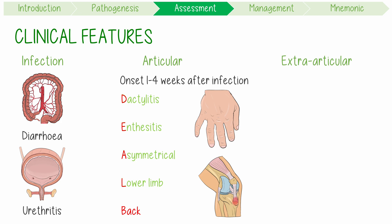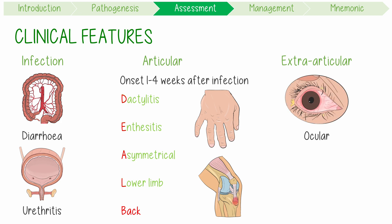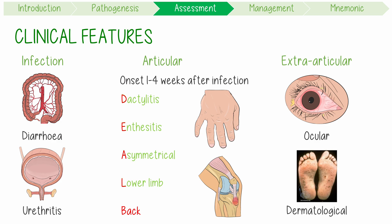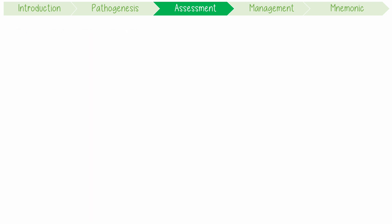Extraarticular features include ocular signs like conjunctivitis and dermatological ones like keratoderma blenorrhagica. These are hyperkeratotic skin lesions on the soles and palms resembling pustular arthritis.